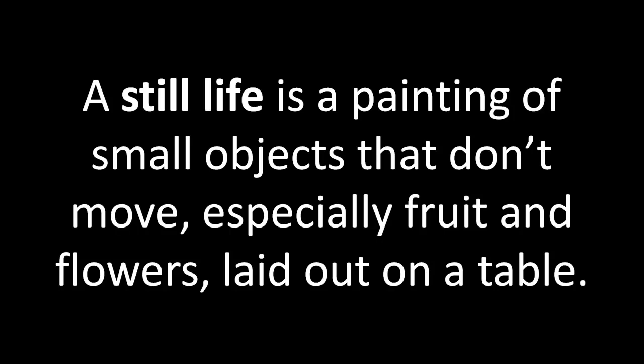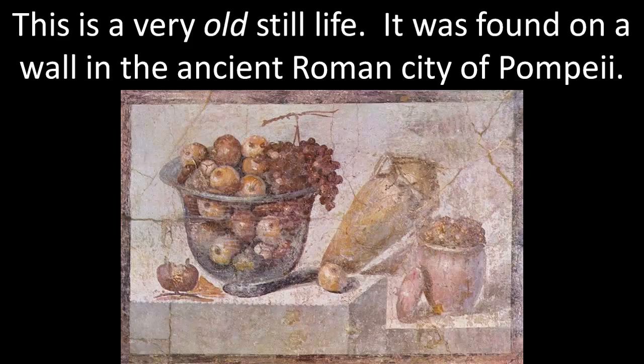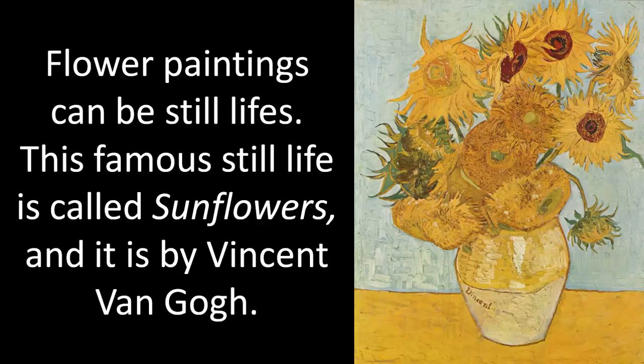A still life is a painting of small objects that don't move, especially fruit and flowers laid out on a table. This is a very old still life — it was found on a wall in the ancient Roman city of Pompeii. Flower paintings can be still lifes. This famous still life is called Sunflowers, and it is by Vincent van Gogh.